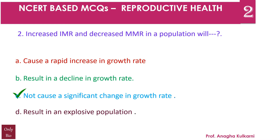IMR refers to infant mortality rate and MMR refers to maternal mortality rate or ratio. A ratio of maternal deaths per 1 lakh births is expressed as maternal mortality ratio, and the number of infant deaths per thousand births of children below one year of age is expressed as infant mortality rate. Both IMR and MMR are inversely proportional to the rate of development.